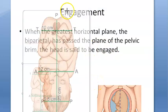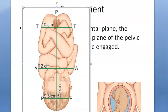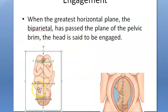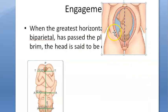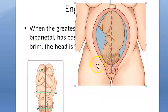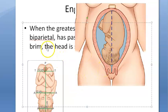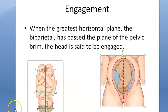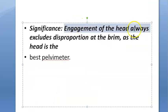In this photo you can see the biparietal diameter of 9.5 cm. If this has crossed the plane of the pelvic brim — the pelvic brim being the diameter of the inlet — then the head is engaged. So if it has crossed the inlet, it is engaged.